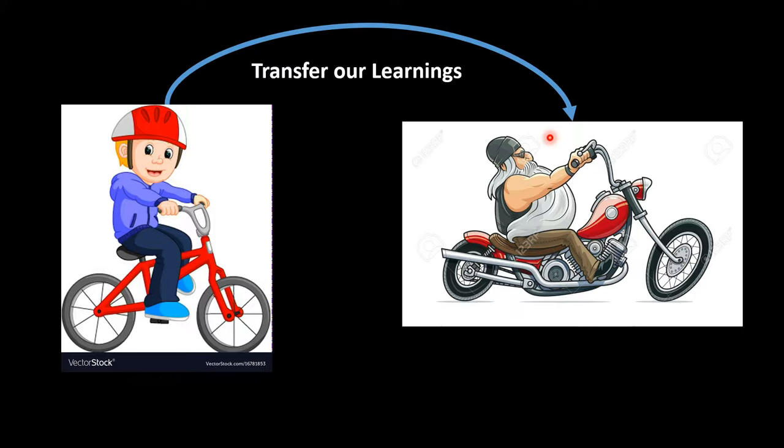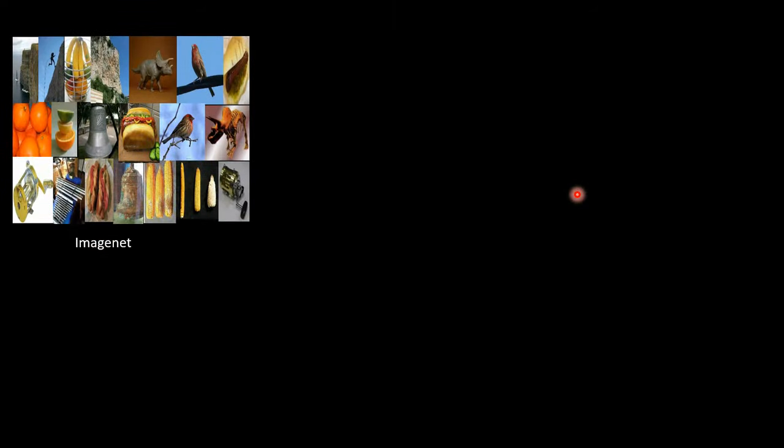One thing that we could do is we could transfer our learnings. For example, as you can see, if you know how to ride a bicycle, you can quickly learn how to ride a motorbike because whatever knowledge you have gathered here while solving this task, you're able to transfer that knowledge to another task. The same logic can be applied even in deep learning, and it has been applied. It is famously called transfer learning.